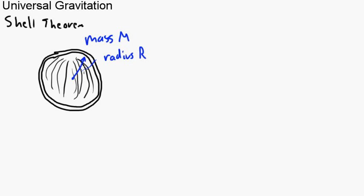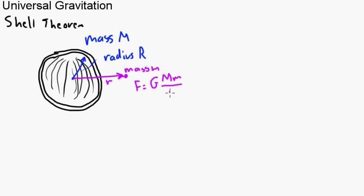So, what's the gravitational attraction that this shell exerts on some other object? Well, Newton proved, using calculus — which he invented — that if you have an object outside the shell, this attracts as though the mass of the shell was concentrated at the center point. So you just use this distance r from the center of the shell in your gravity calculations. If this outside object has mass little m, then the force on it equals G times big M times little m over r squared.